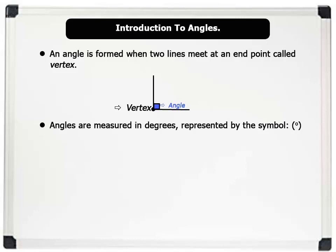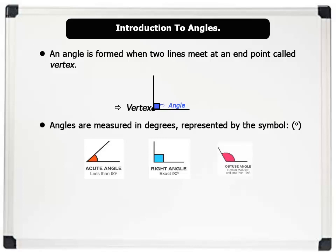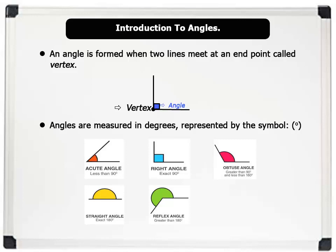There are basically six types of angles: one, acute angle, which is less than 90 degrees; two, right angle, which equals 90 degrees; three, obtuse angle, which is greater than 90 degrees but less than 180 degrees; four, straight line angle, which equals 180 degrees; five, reflex angle, which is greater than 180 degrees but less than 360 degrees; and six, a full angle such as a circle, which equals 360 degrees.